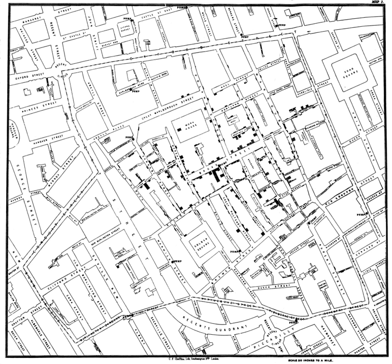Cultural geography is the study of cultural products and norms, their variation across spaces and places, as well as their relations. It focuses on describing and analyzing the ways language, religion, economy, government, and other cultural phenomena vary or remain constant from one place to another and on explaining how humans function spatially. Subfields include social geography, animal geographies, language geography, sexuality and space, children's geographies, and religion and geography.